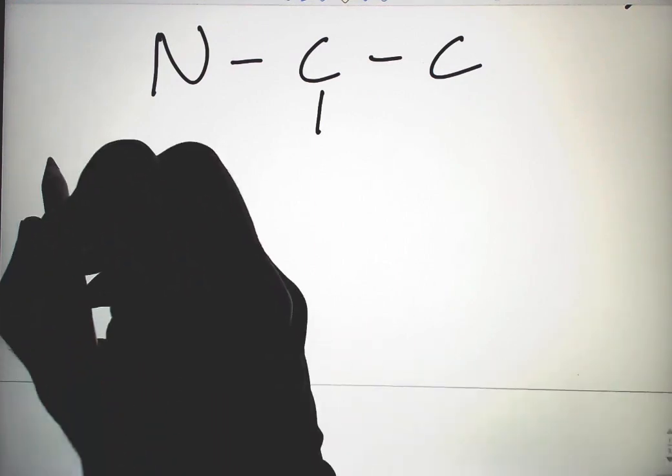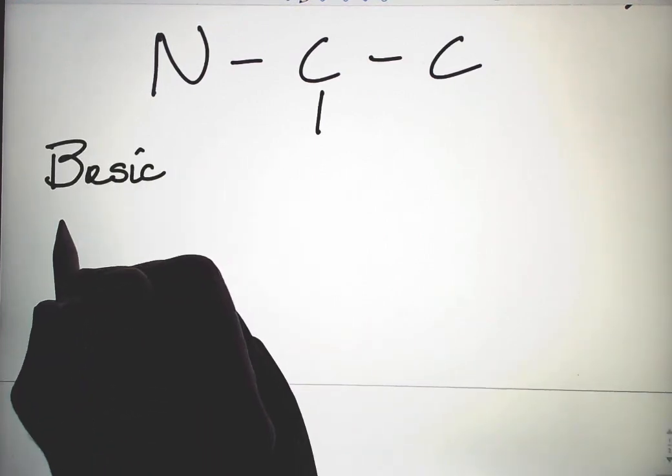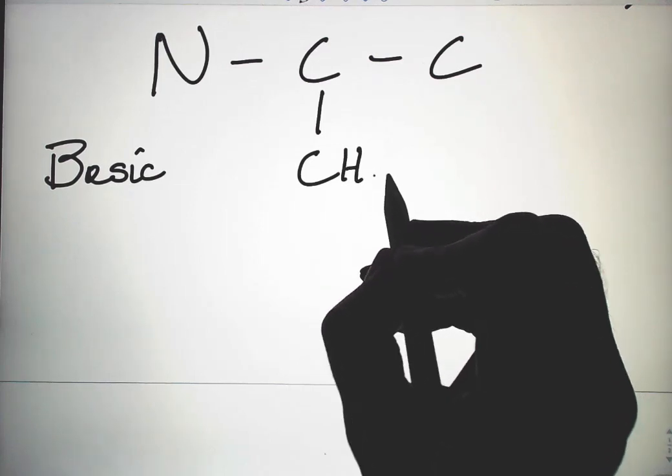R groups can also be basic. There are three of these. Their structure is a little more complicated.